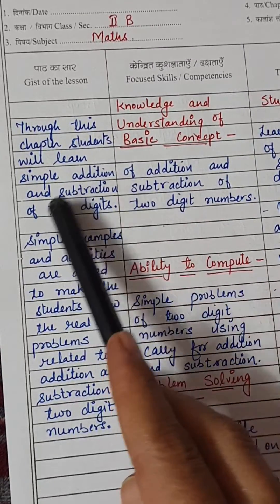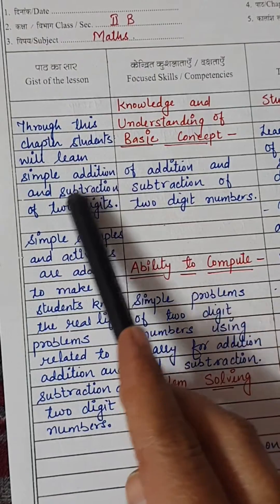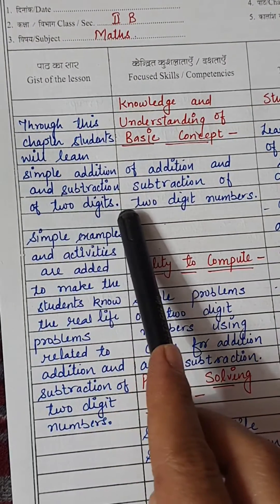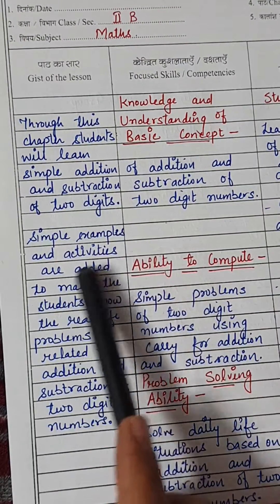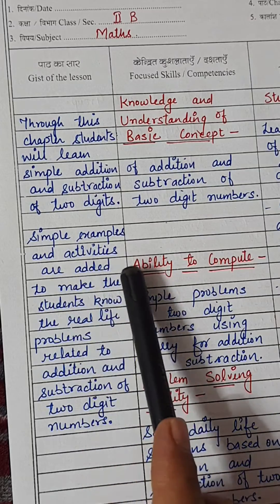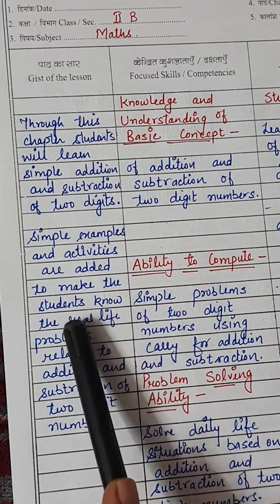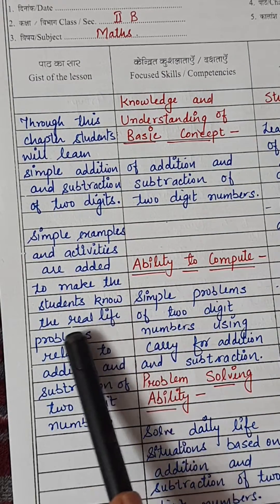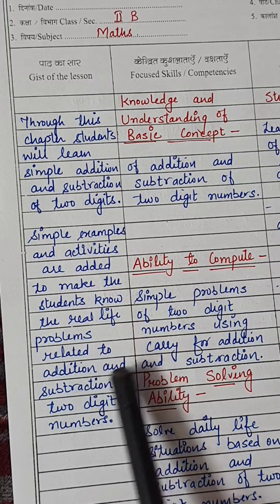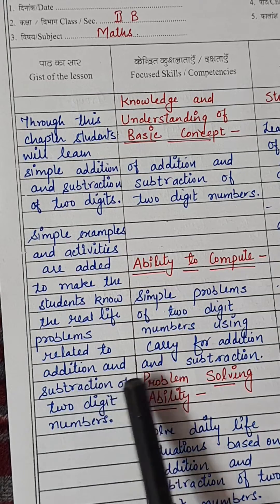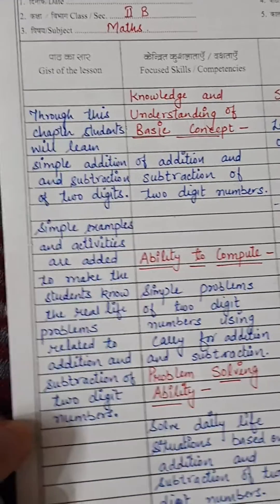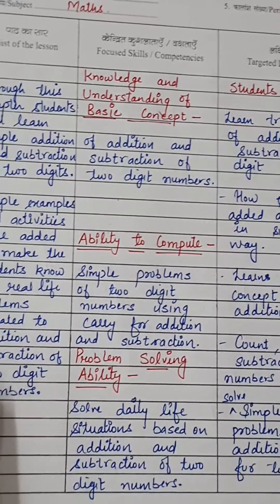Through this chapter, students will learn simple addition and subtraction of two digits. Simple examples and activities are added to make the students understand real-life problems related to addition and subtraction of two-digit numbers.